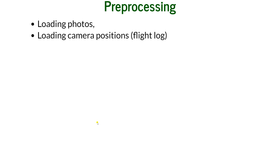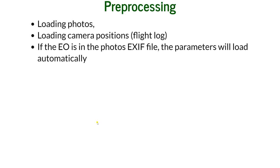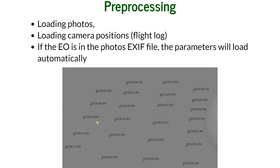Pre-processing consists of loading photos and also loading the camera positions if you have them written in a log file — you import the log file into the software. This is only necessary if the parameters are not written in the EXIF file; if they are, the parameters load automatically and you won't need to load the log file at all. This is how it should look on your screen: each little dot represents one photo, and you can see the lines showing how the drone was flying and triggering photos along those flight lines.